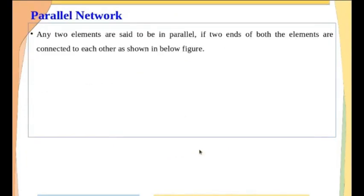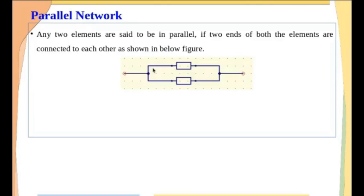The second one is the parallel network. Any two elements are said to be connected in parallel if two ends of both elements are connected to each other. If you take any two-terminal device, both ends of one element should be connected to both terminals of another element. For example, this is one element and this is the second element — two terminals of this have been connected to the other two terminals of the second element. If I pass any current through the first terminal, this current will divide between element one and element two, and both currents will add up giving a total current at the other end.